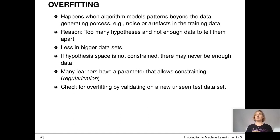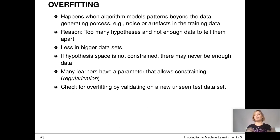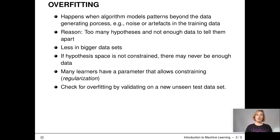Overfitting happens when you have too many hypotheses and not enough data to tell them apart. It is less of an issue when you have bigger datasets, so the more data, the more bad hypotheses are usually eliminated. But if the hypothesis space is not constrained, there may never be enough data to avoid overfitting. The rule of 'more data is better' only works if we have a constrained set of models.